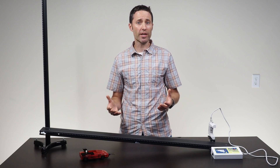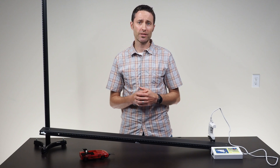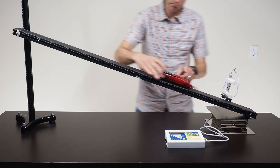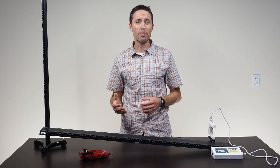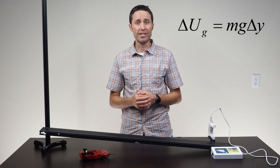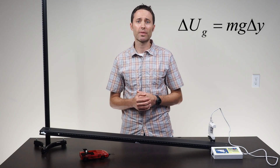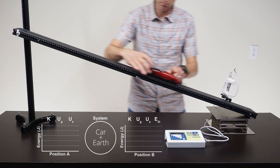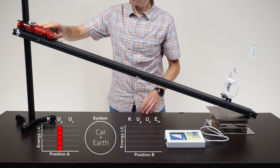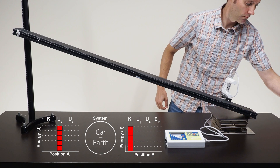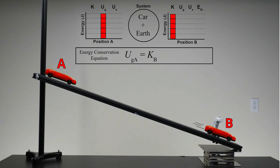Scenario two involves elevating one side of the track to make an incline. When the car is raised above the photogate height, students can calculate the amount of gravitational potential energy added to the car and Earth's system. Assuming friction is negligible, this initial gravitational potential energy is equal to the car's kinetic energy when it passes through the photogate. For this video, I will discuss the second scenario. Remind students that the final kinetic energy is equal to the initial gravitational potential energy only if the height of the car when moving through the photogate is considered to be a height of zero.